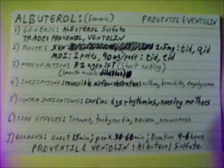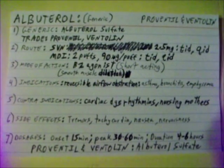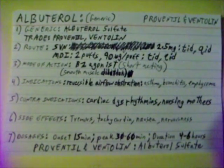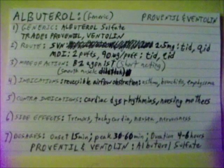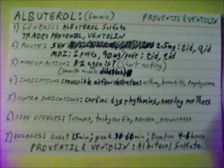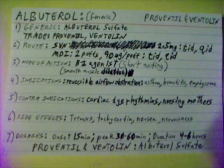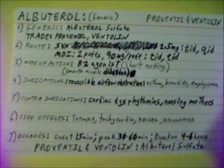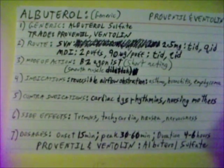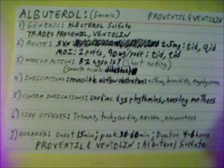Albuterol Sulfate. Generic name: albuterol sulfate. Trade name: Proventil. Albuterol can be given by small volume nebulizer, 2.5 milligrams, TID — three times daily — or QID — four times daily.